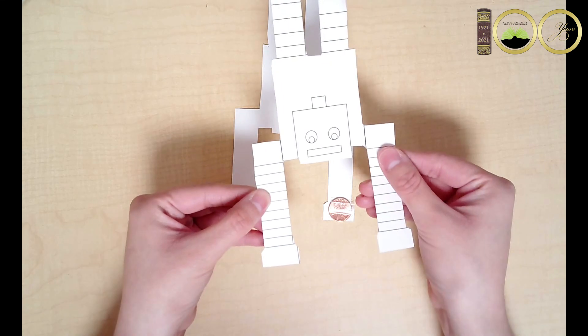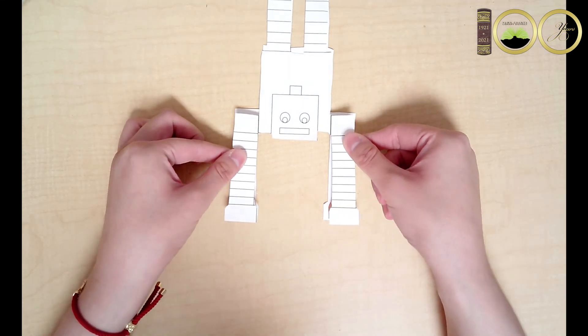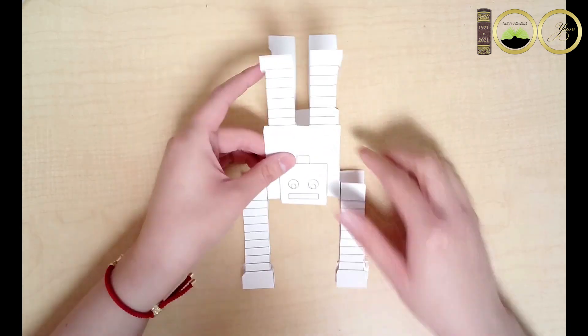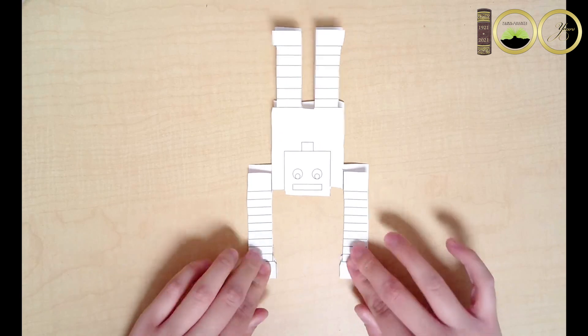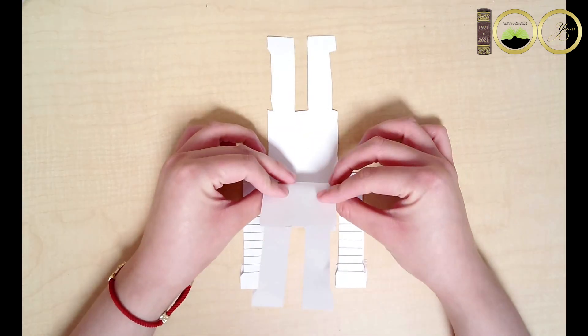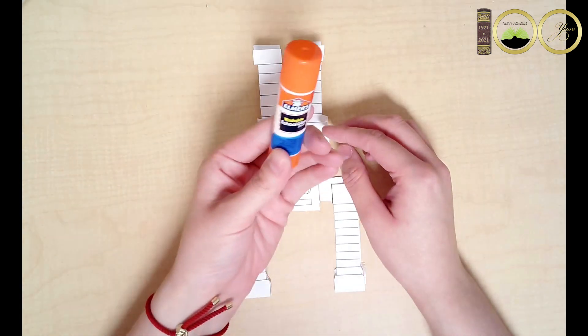Now that both hands are ready, grab your other robot and press them together. Make sure they are evenly put together. Then, use a glue stick to put glue between the two robot bodies and stick them together.